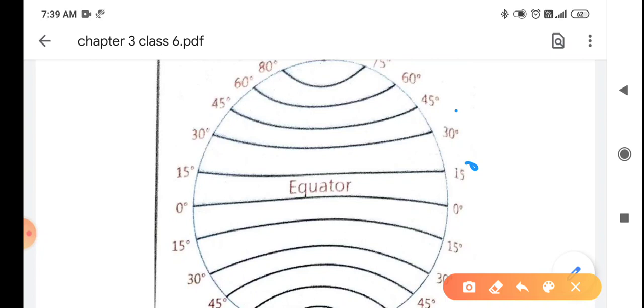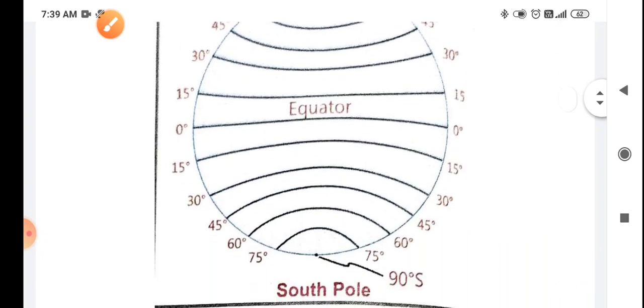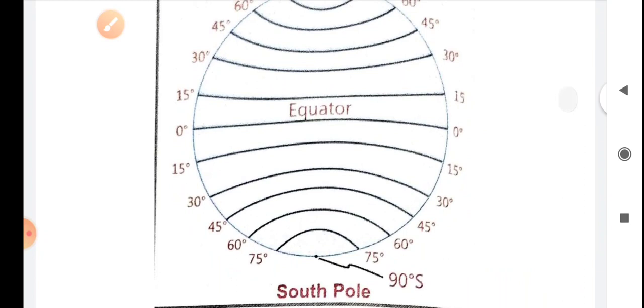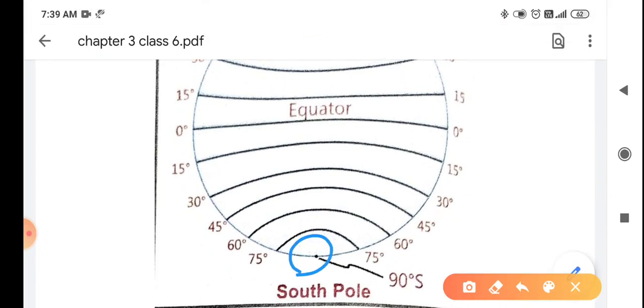So there are different latitudes. We can see different latitudes here. And 90 degree south is a point, as we have discussed.